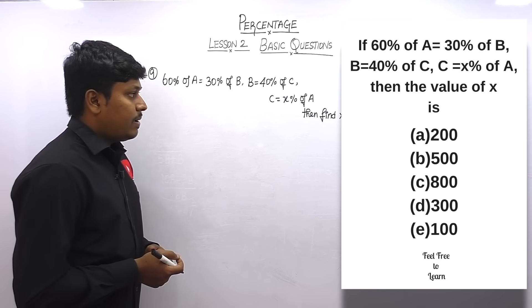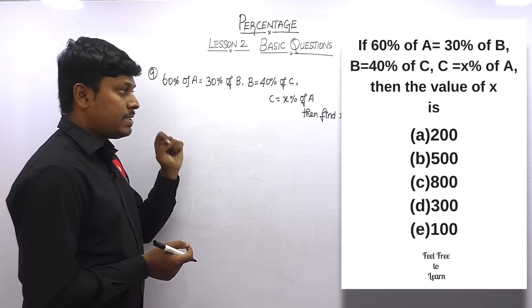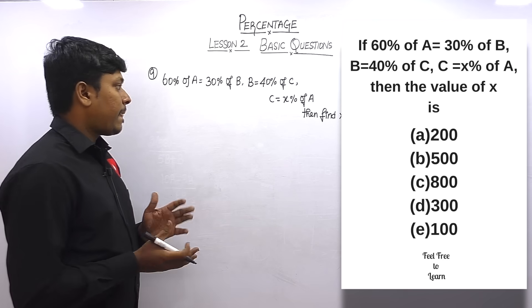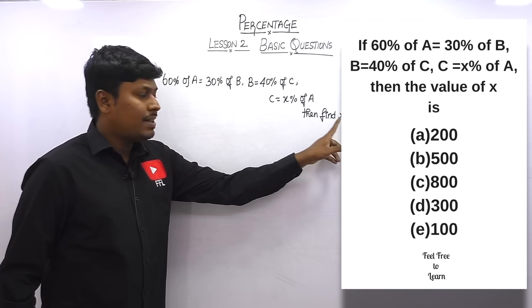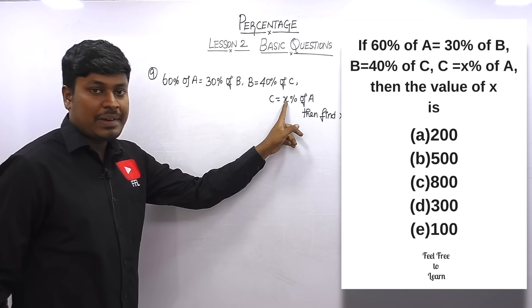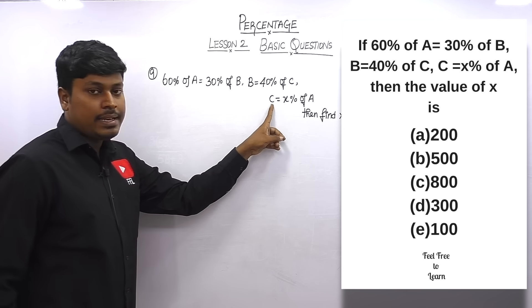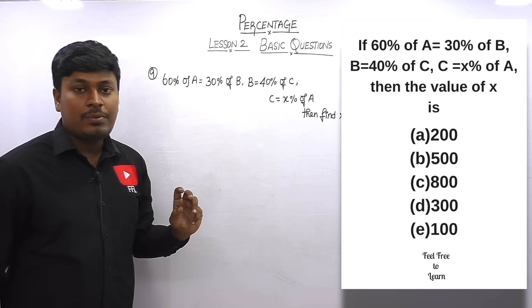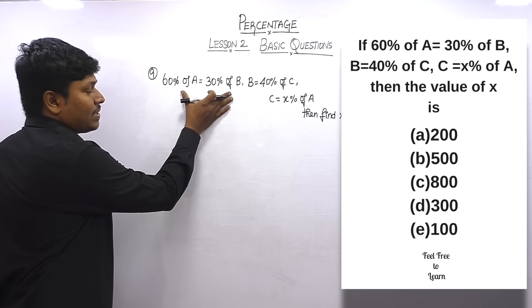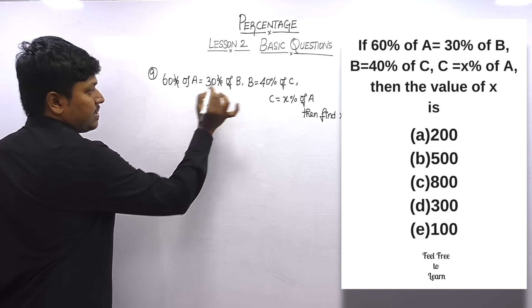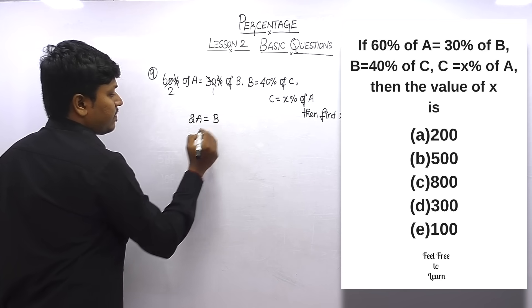Question number nine: if 60% of a = 30% of b, b = 40% of c, and c = x% of a, find x. We need to eliminate a and c. Using expression 1: cancelling percentages and simplifying gives 2a = b.